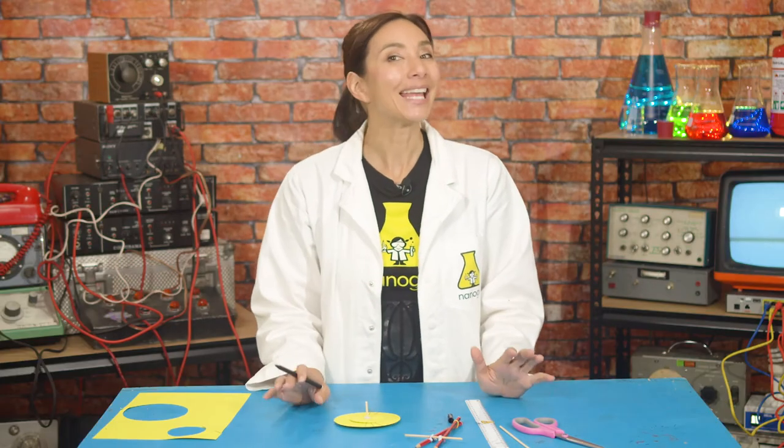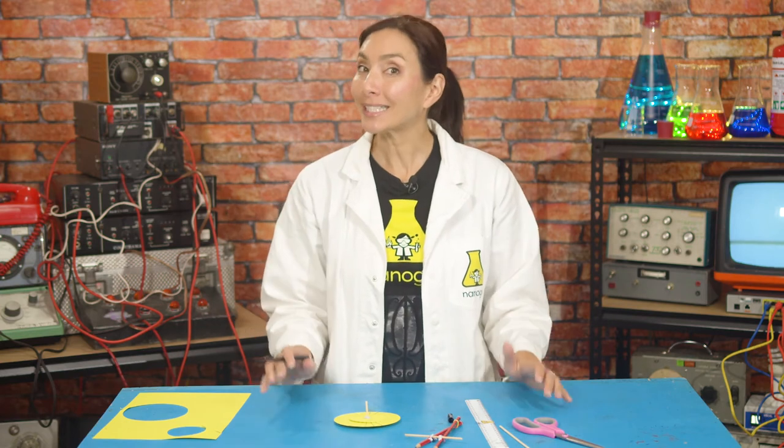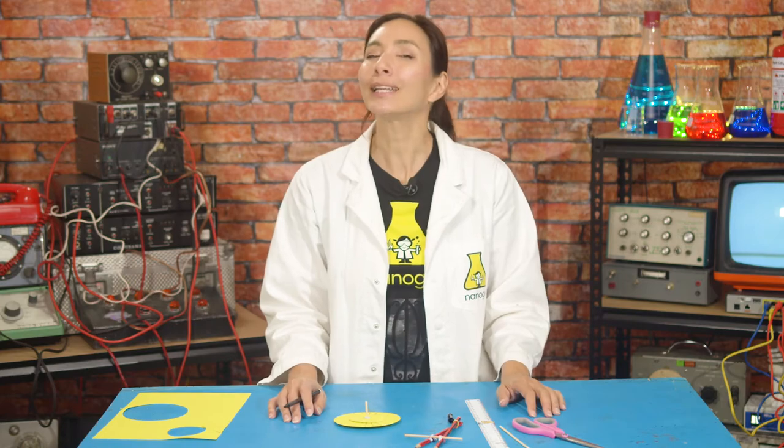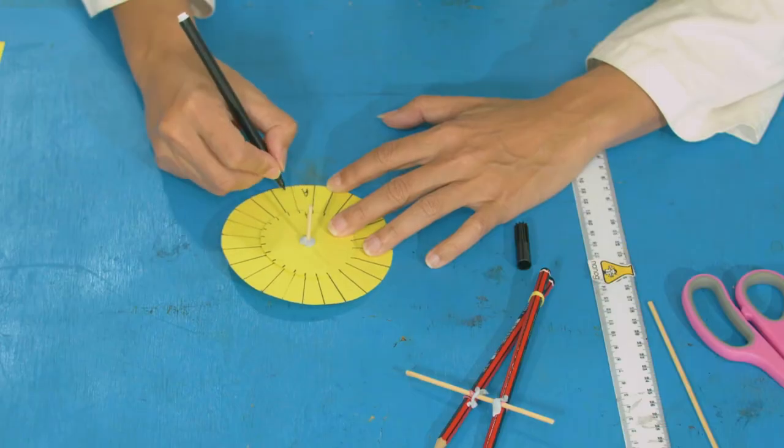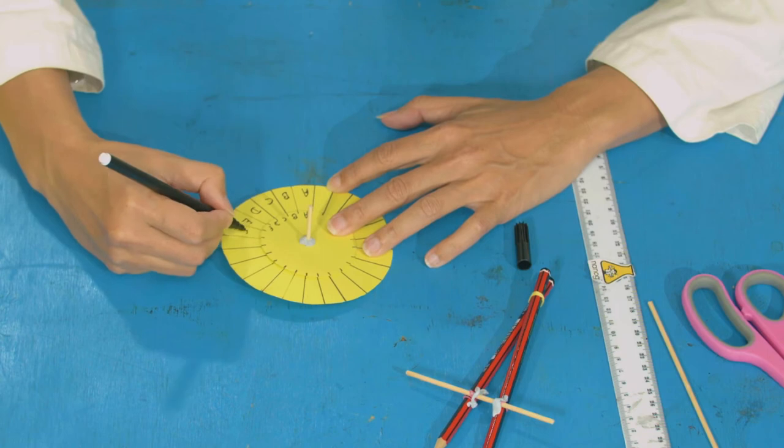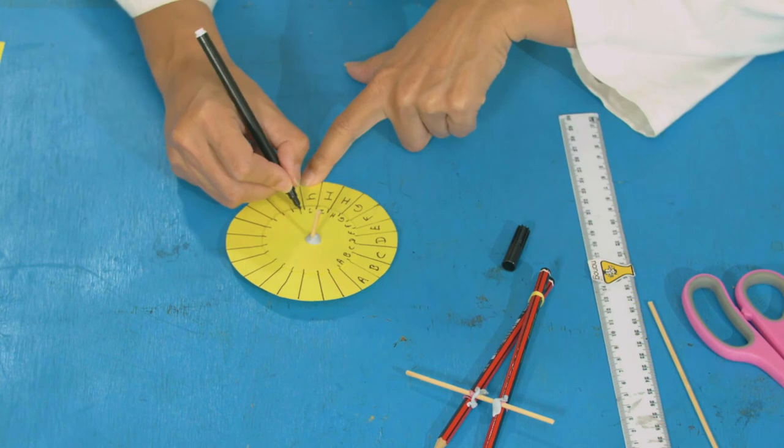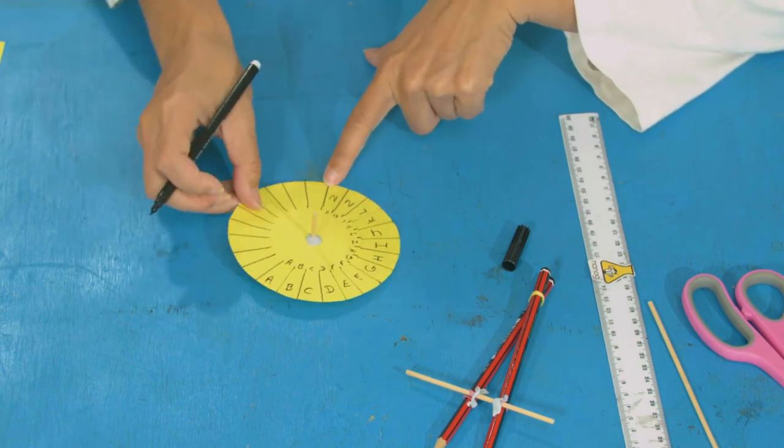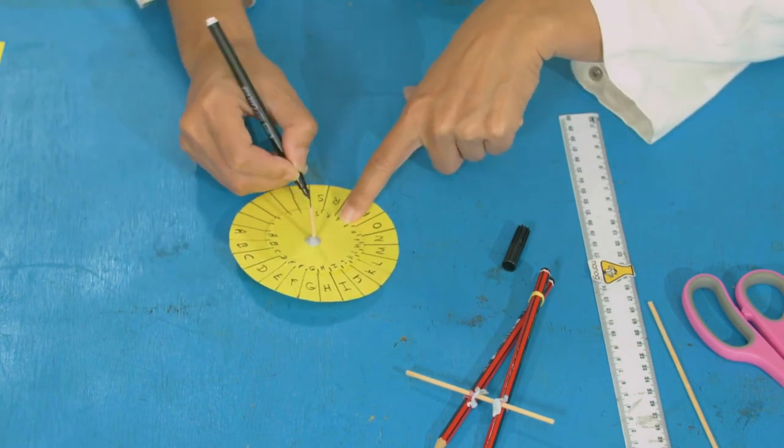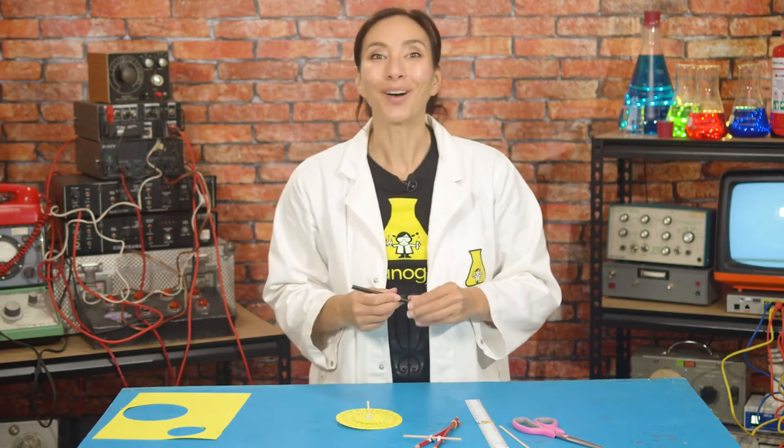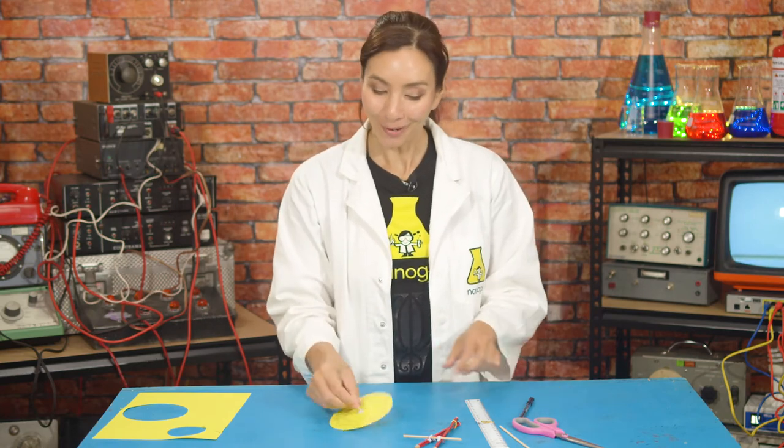We're going to write our alphabet around the edge of each disc. There are 26 letters of the alphabet, but we only have 24 slices. Cryptographers, people who make and break codes, know that X and Z are hardly ever used, so we're going to leave those ones off. Work around the edge with the bottom of your letters facing the edge, which will make it easier to read later. We're going to go A, A, B, B, C, C and so on all the way around. At the end you're going to go V, W, Y and then you're done. Now we have our cipher wheel.